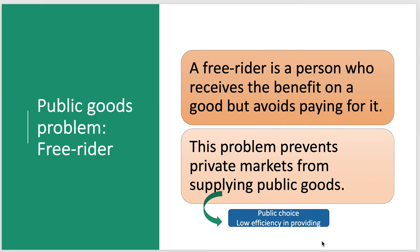What's a free rider? When you have a public good, there's a person who receives the benefit of the good but avoids paying for it. A free rider is like someone who sneaks on the bus without paying — that's actually where the term comes from — or someone who jumps the turnstile to get on the subway or public train. This problem prevents private markets from supplying public goods.